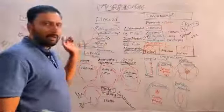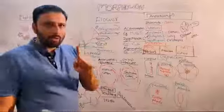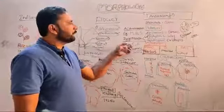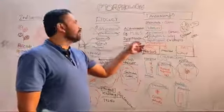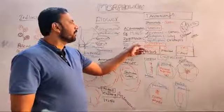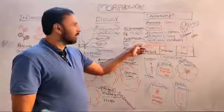Zygomorphic — the flower can be cut into only one plane to get equal halves — example Caesalpiniaceae (Gulmohar) and Fabaceae (Dolichos). Asymmetric flower — the flower cannot be cut into any plane to get equal halves.